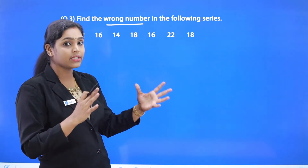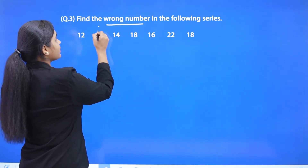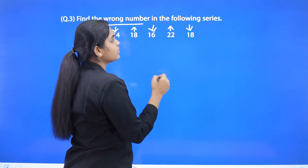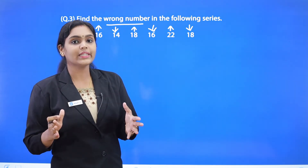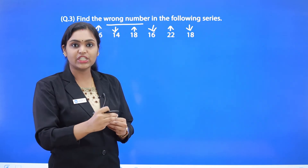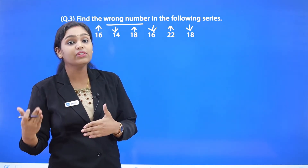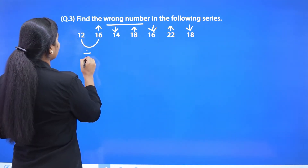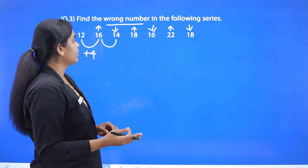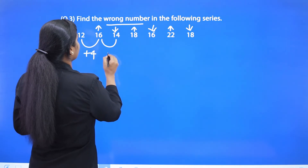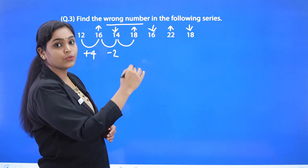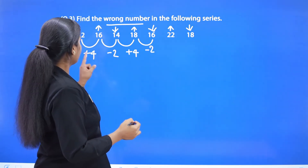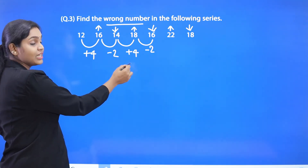When you analyze this series, you can find it has a varying pattern — 12 increases to 16, then decreases to 14, then increases, then decreases. This suggests a mixed pattern of addition and subtraction. The relation is: 12 plus 4 is 16, minus 2 gives 14, plus 4 gives 18, minus 2 gives 16. So the pattern is +4, −2, +4, −2.